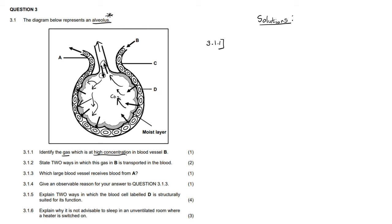Question 3.1.1 asks us to identify the gas at high concentration in blood vessel B. Blood vessel B is bringing in blood from somewhere, and that blood is rich in carbon dioxide. You can see arrows indicating that a gas is diffusing out from the blood vessel into the alveolus — the only gas that leaves the blood vessels and goes into the alveolus is carbon dioxide. So the answer is carbon dioxide.